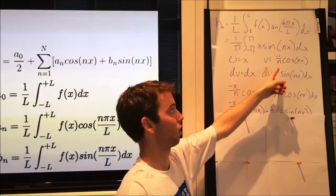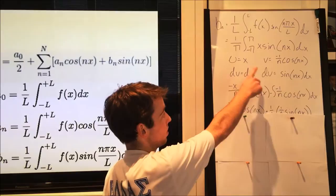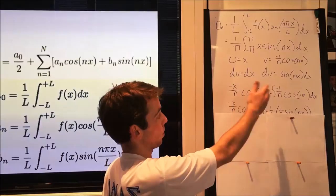the derivative of x, and the integral of sine of nx dx is negative 1 over n cosine of nx. Then, we multiplied u by v and took the integral of v dv, so we had this equation.